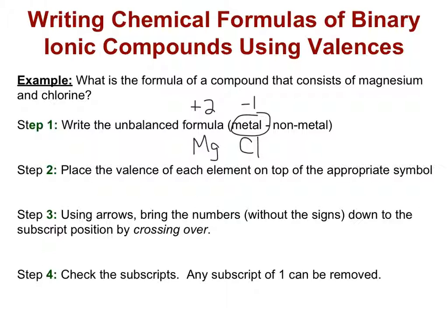Now what we're going to do is use arrows to bring the numbers without the signs to the subscript position by crossing over. That means that the 2 that was on top of the magnesium now becomes a subscript for chlorine, and the 1 that was on top of the chlorine now becomes a subscript for magnesium.